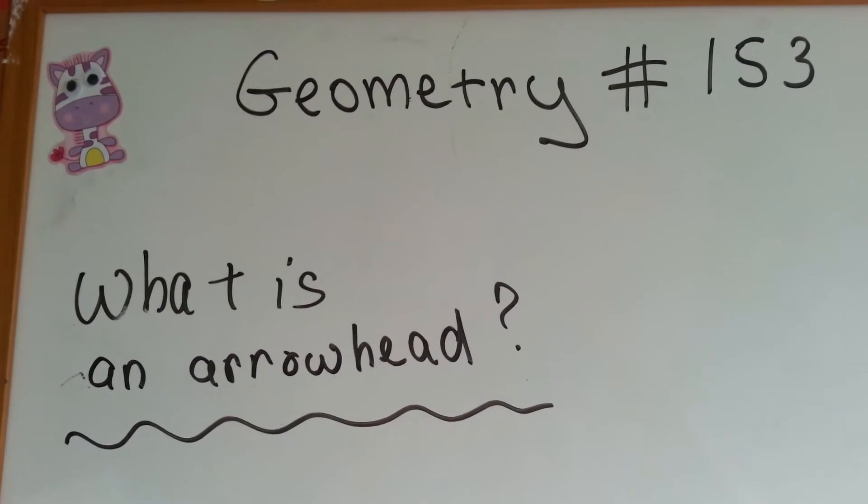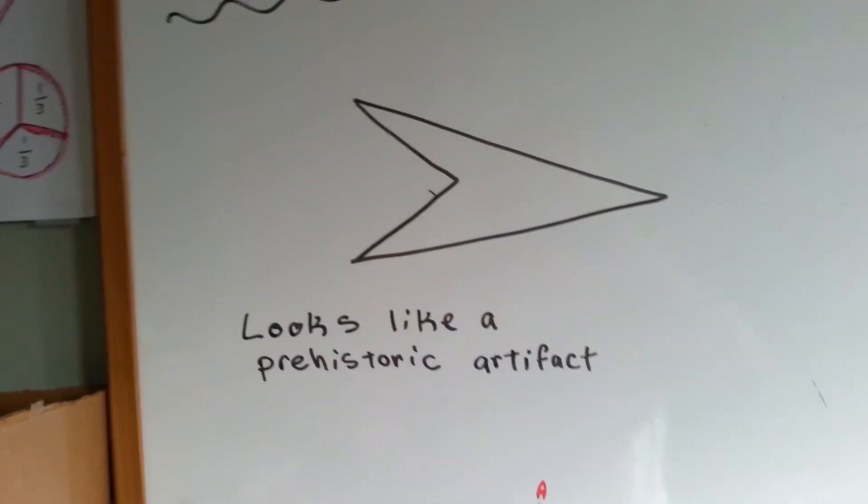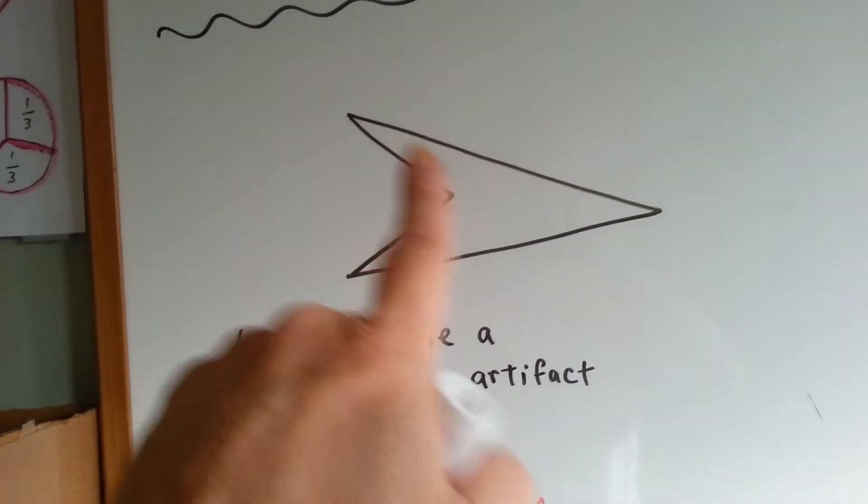Geometry 153. What is an arrowhead? That's an arrowhead. It kind of looks like the prehistoric artifact, made out of stone.